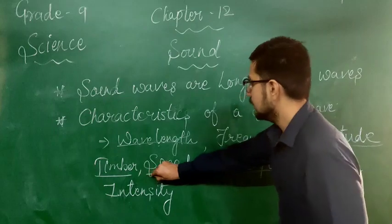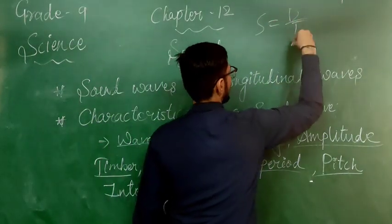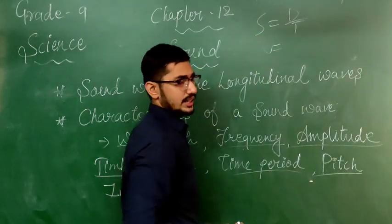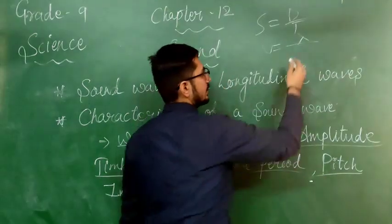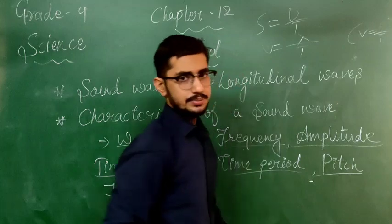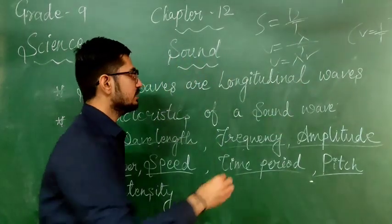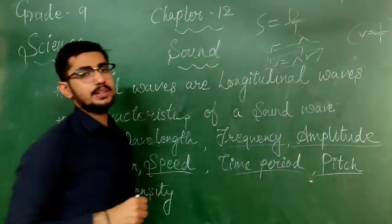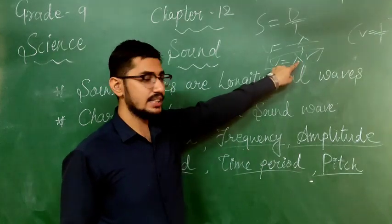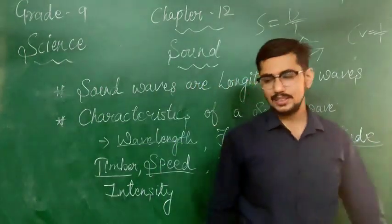Next is speed of sound. We already know speed is distance divided by time, which we covered in Chapter 8. Here, distance is represented by lambda (λ, wavelength) and time is represented by T (time period). Using the formula we have seen — that frequency f equals 1/T — substituting gives us: speed v = λ × f. So with the frequency and wavelength known, you can find the speed of sound. That is the formula for the speed of sound.